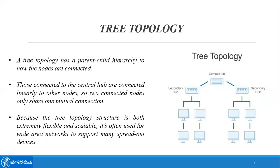Nodes connected to the central hub are linearly connected to other nodes, so two connected nodes share only one mutual connection. Because of its structure, tree topology is both extremely flexible and scalable. It's often used for wide area networks to support many spread-out devices. When systems are spread across a location, the best topology to use is tree topology.